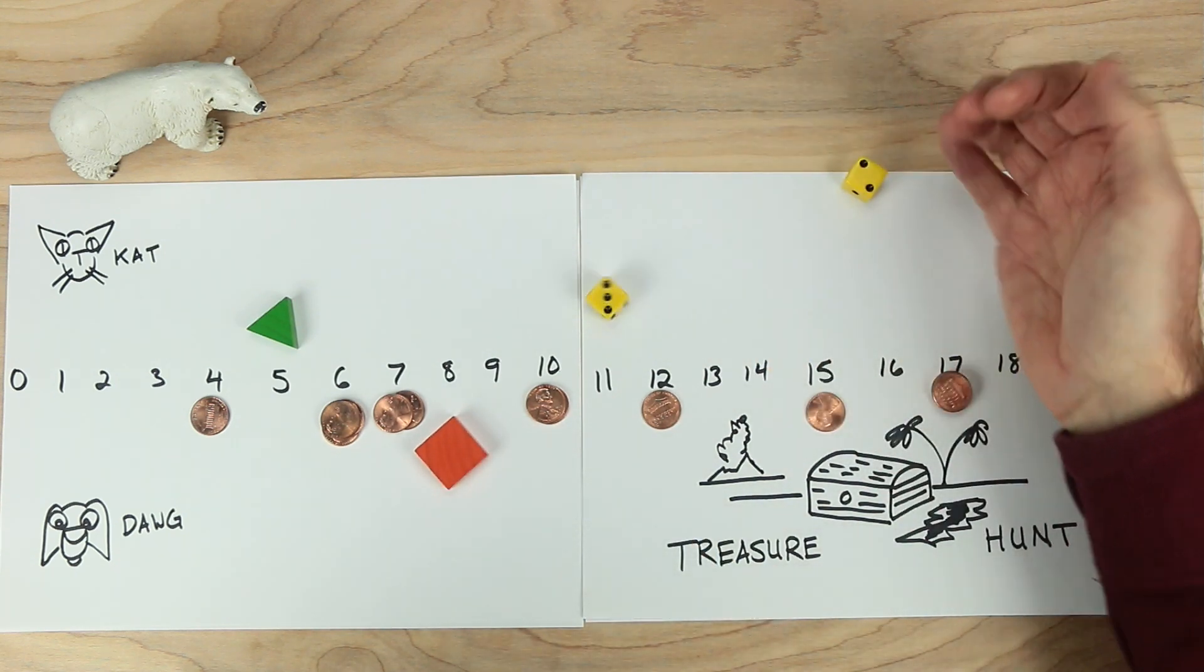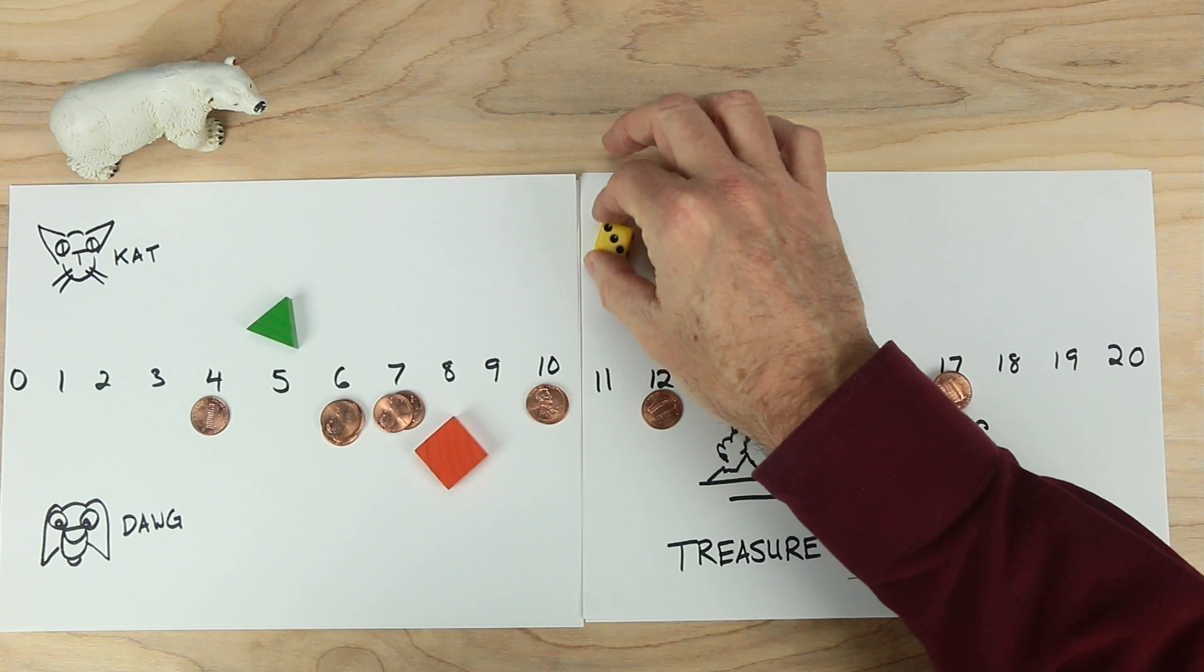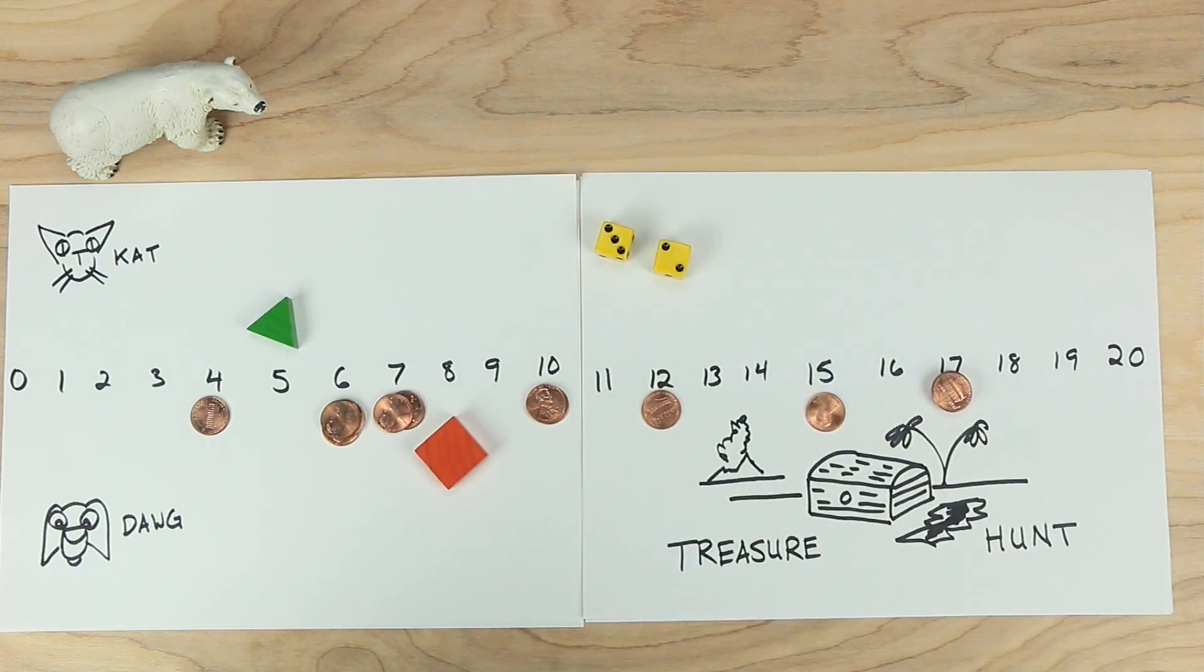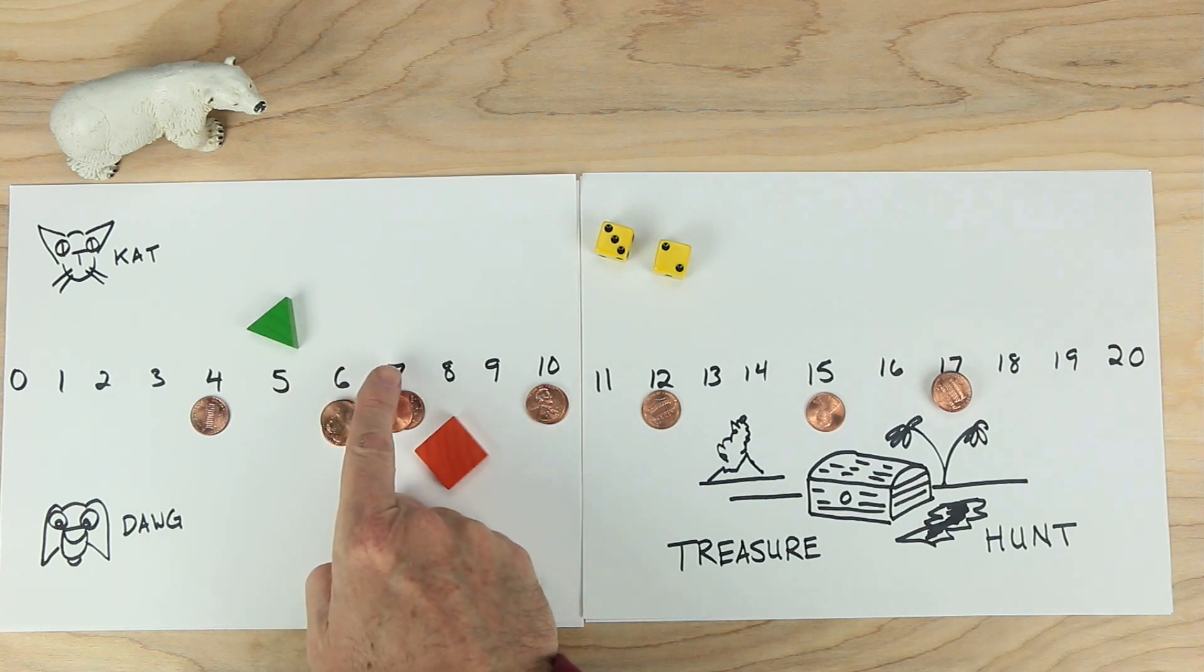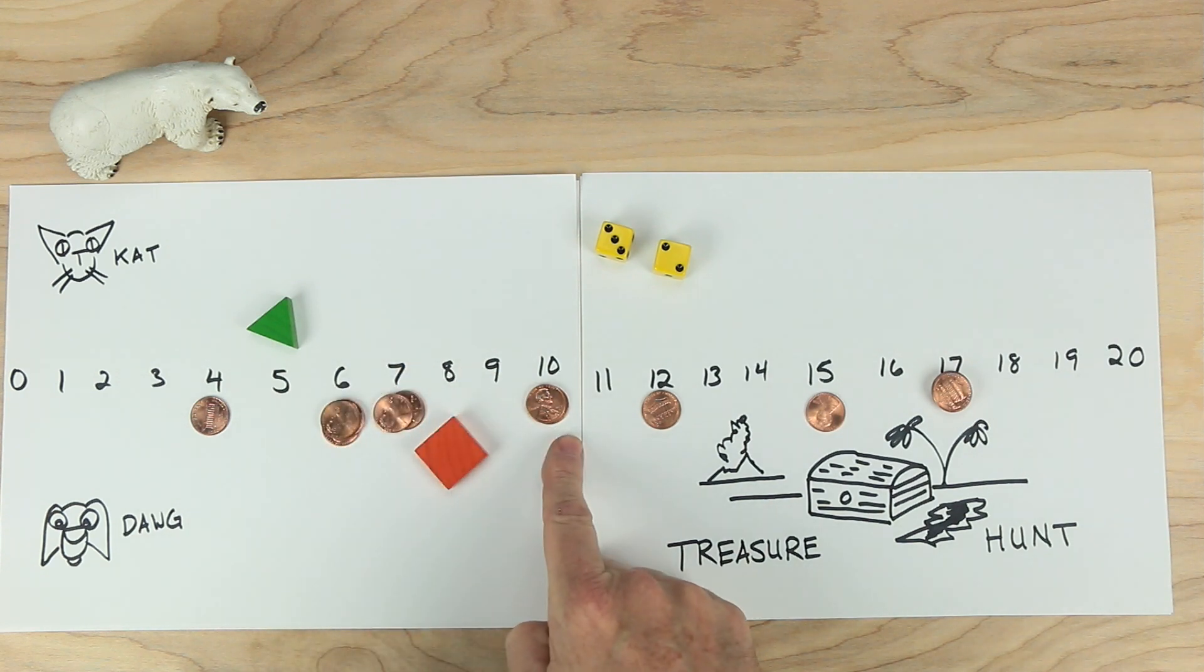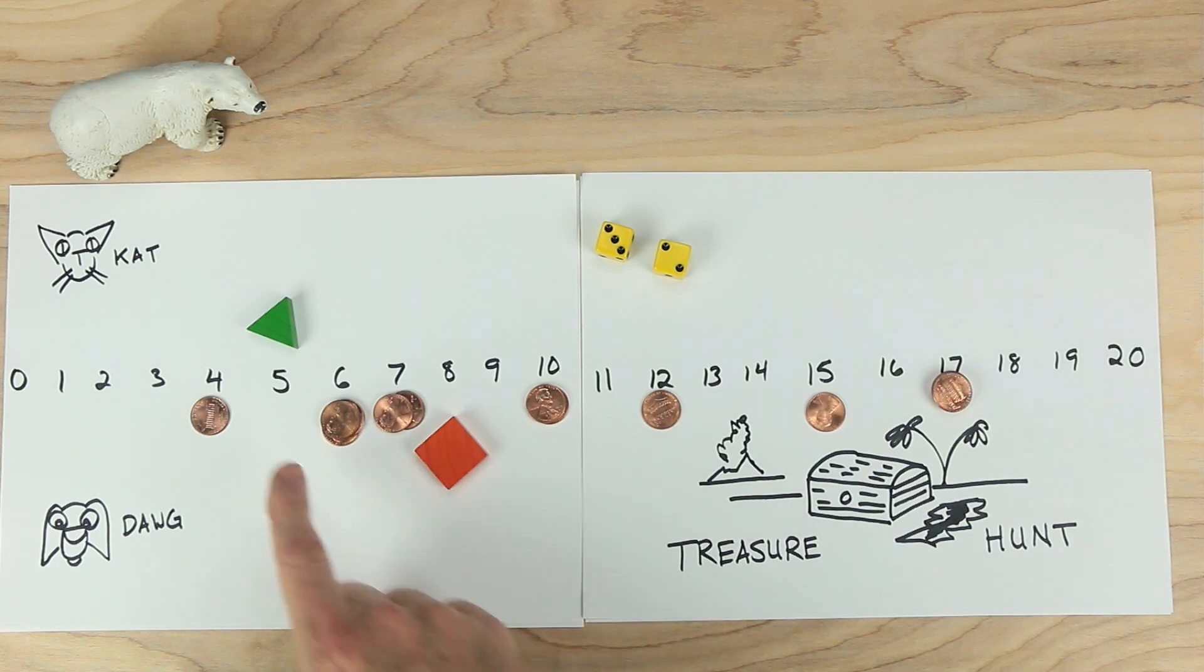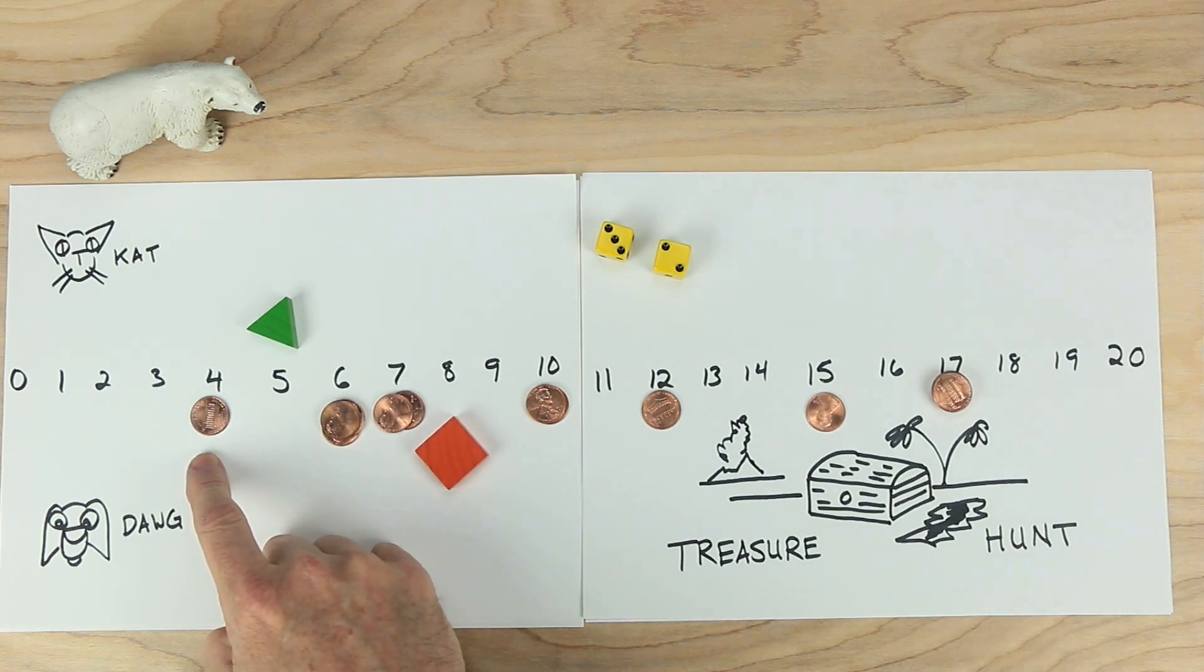Cat's turn. Cat rolls a two and a three. Now this is a special roll. Could go two forward. One, two, and then three more. One, how much treasure there is. There's two pieces of treasure at the ten. Or could choose to go two forward. One, two, and then three back. One, two, three, and collect this treasure. That's pretty good.